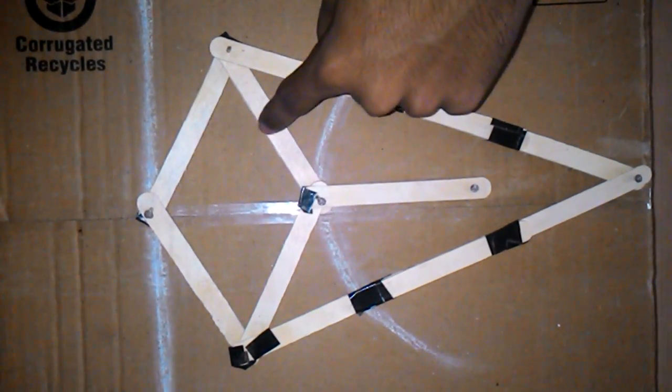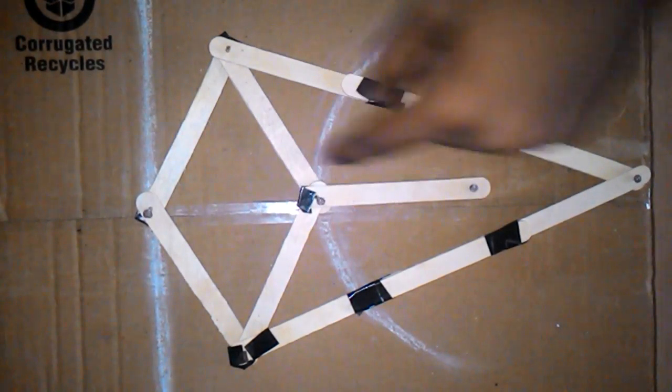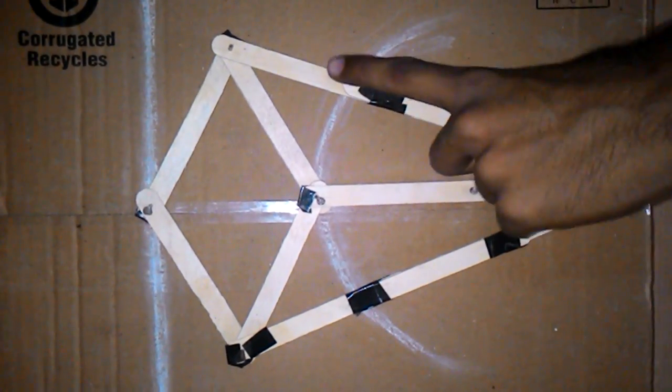These are the four links which form a rhombus. These four links are of equal length. These two links are also of equal length.